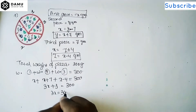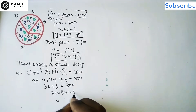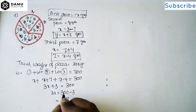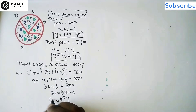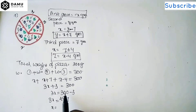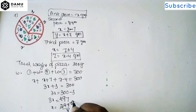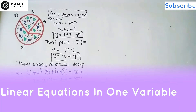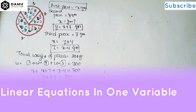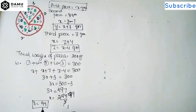Then 3x equals 300 minus 3, which is 297. Then x equals 297 divided by 3. Doing the division: 3 nines are 27, so x equals 99 grams. So x plus 7 equals 99 plus 7.